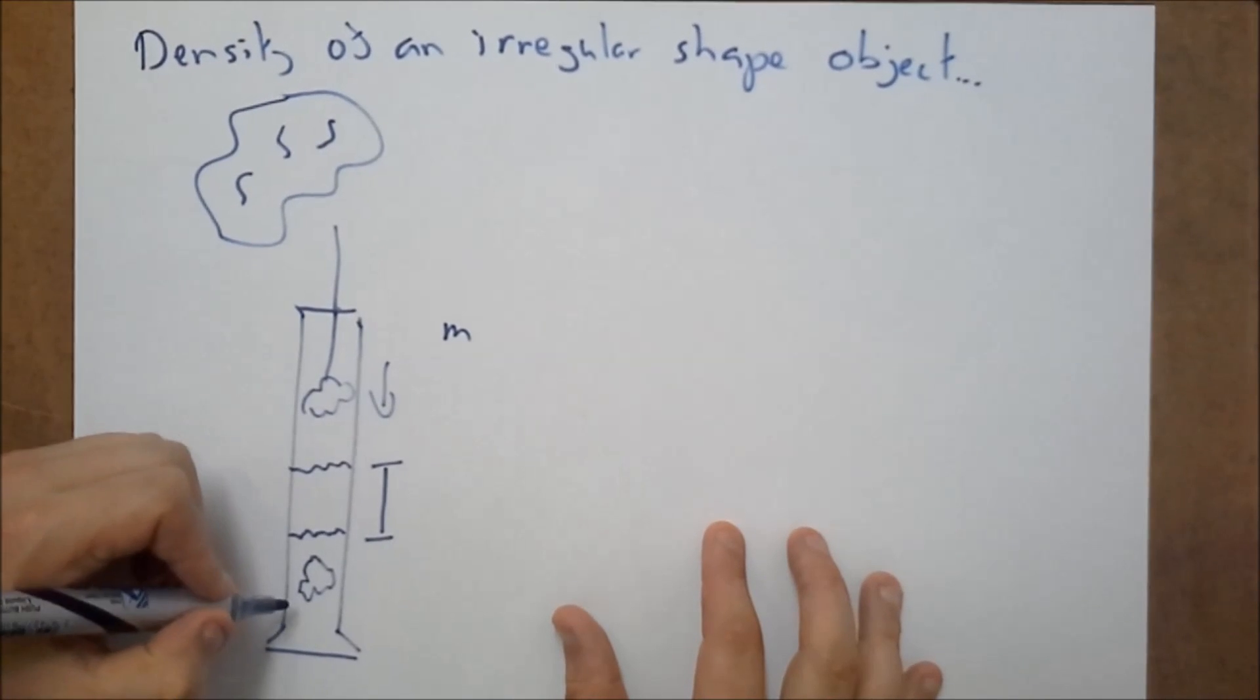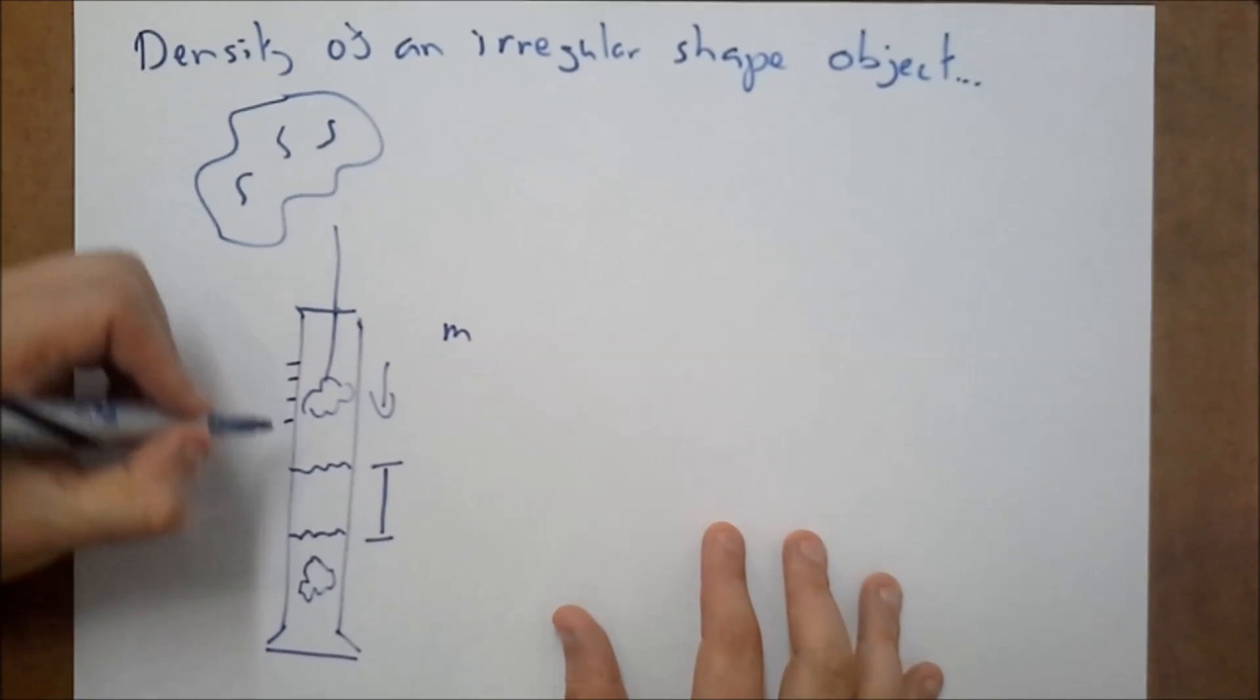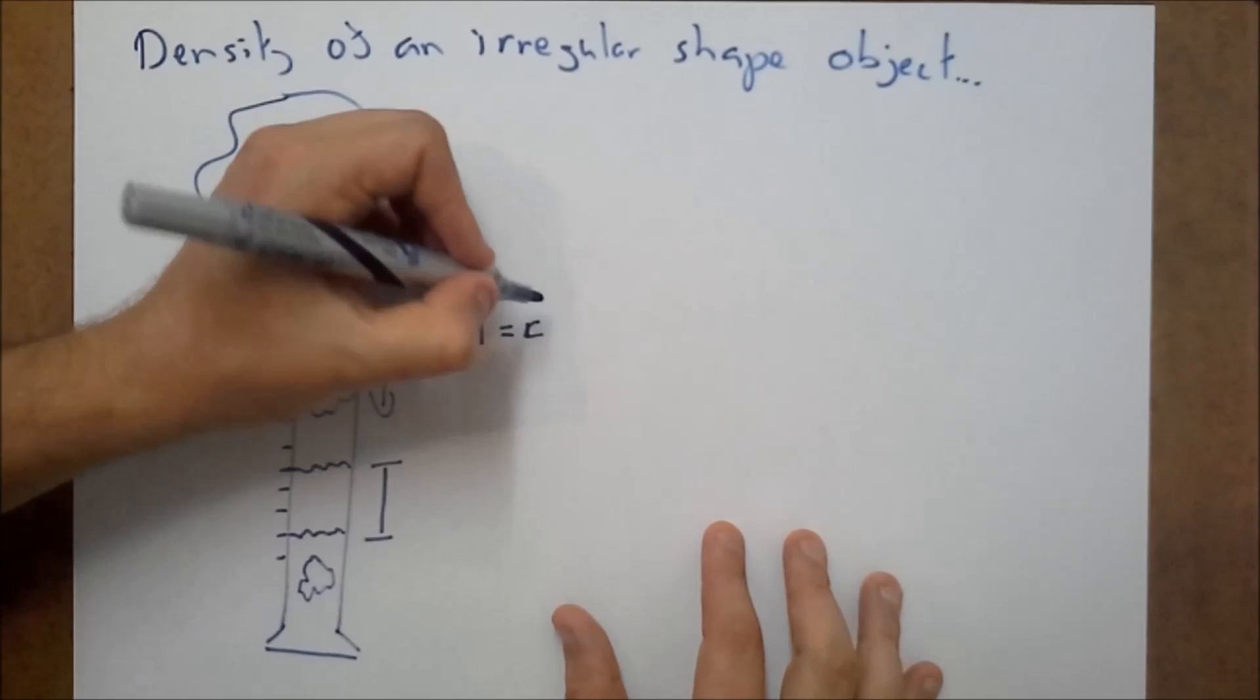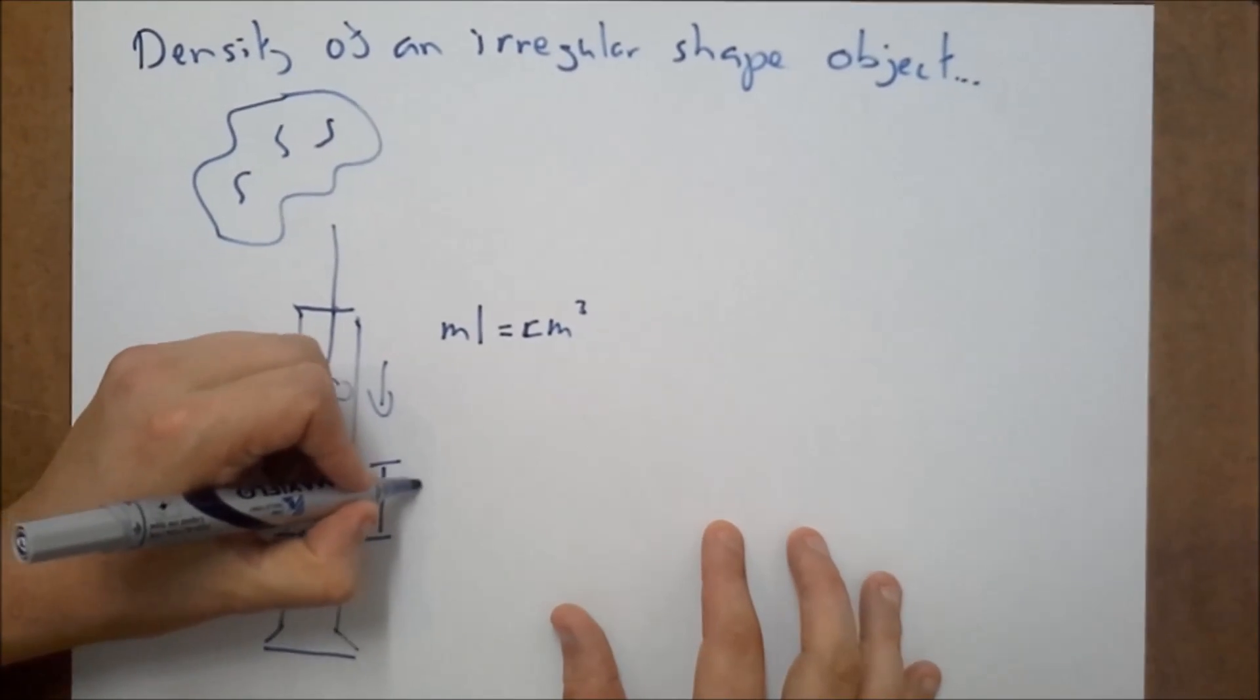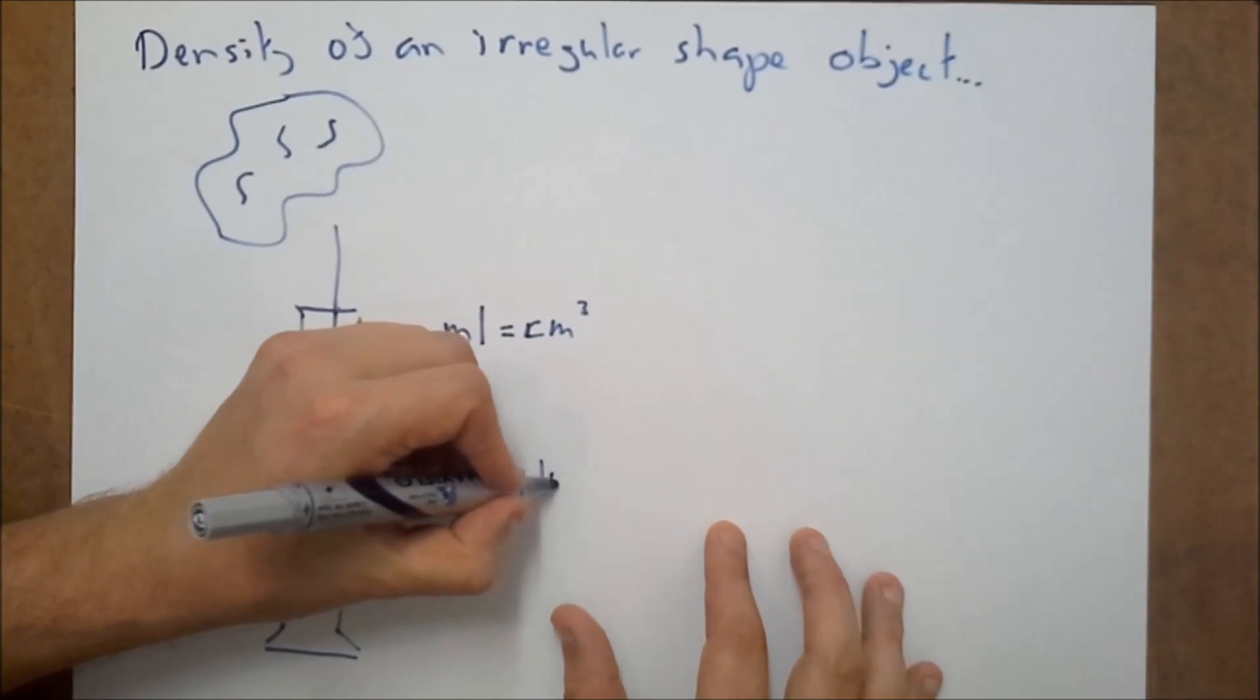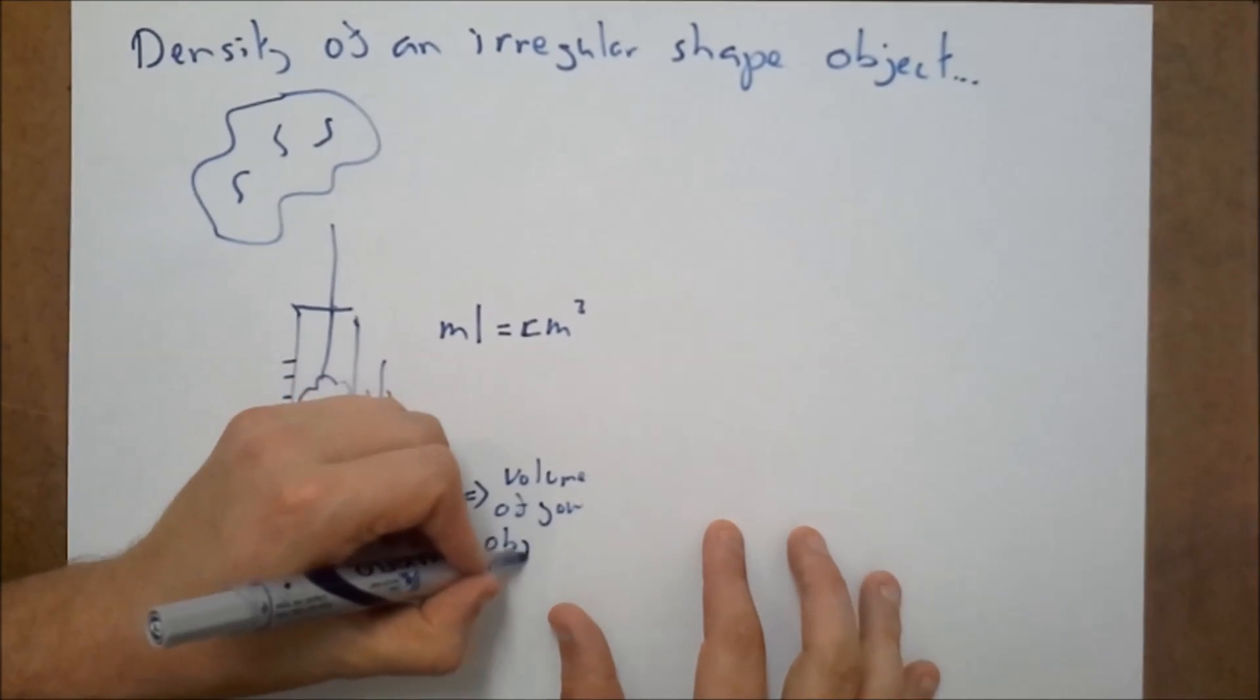Now, all you need to do is measure the difference in the volume. Most measuring cylinders, the scale along the side here is milliliters. But one milliliter of water is equal to one centimeter cubed. So you find the difference here in the volume. That's going to tell you the volume of your object.